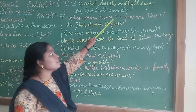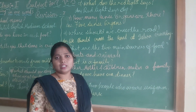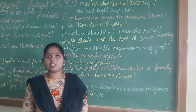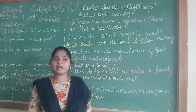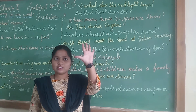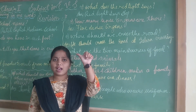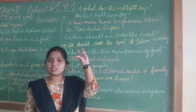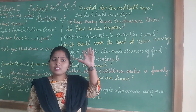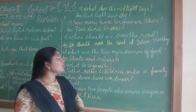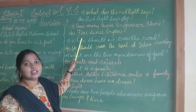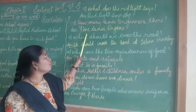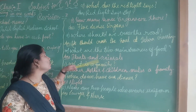8th question: How many sense organs are there? There are 5 sense organs — eyes, ears, nose, tongue, and skin. So the answer is 5 sense organs.